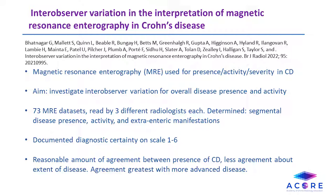Twenty radiologists participated in interpreting MRE datasets of 73 patients with Crohn's disease. Each dataset was read by three different radiologists who determined segmental disease presence, activity, and extraenteric manifestations based on their normal reporting practices. These radiologists also documented their diagnostic certainty of disease presence and activity in each bowel segment on a scale of 1 being the least certain to 6 being the most certain. For evaluation of disease presence, agreement was 68% for newly diagnosed Crohn's disease and 78% for relapsed Crohn's disease.